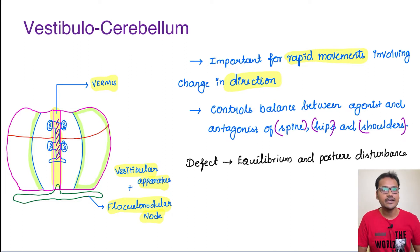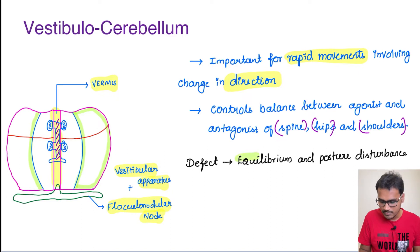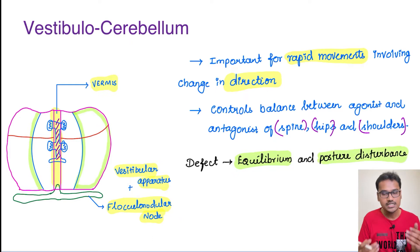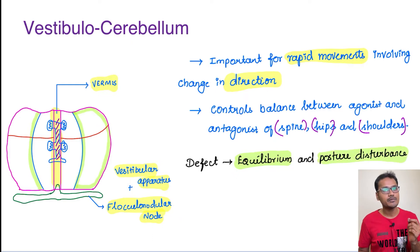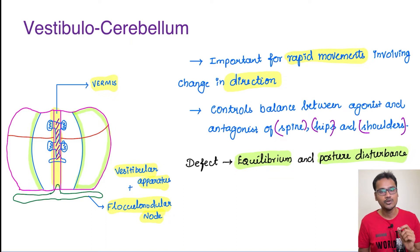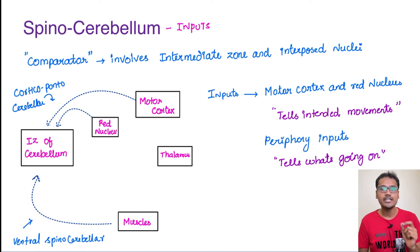Whenever there is a defect in the vestibulocerebellum, the person is going to suffer from equilibrium defects and posture disturbances, because it is maintaining posture. The central group of muscles is for maintaining posture, whereas the distal parts are for fine movements. Now coming to the second part, which is a very important part — the spinocerebellum.